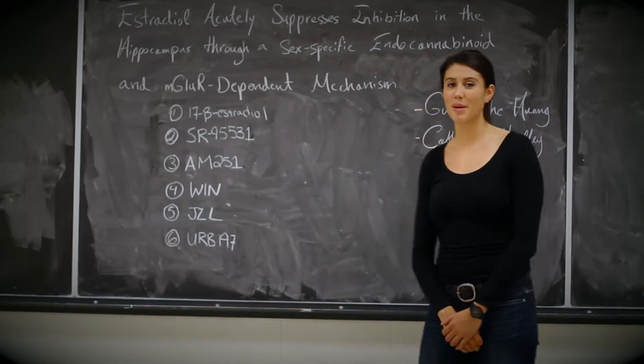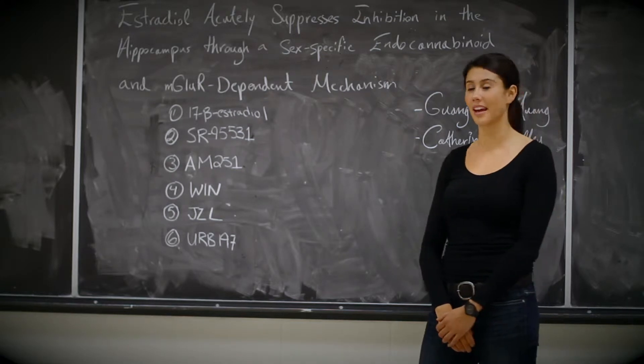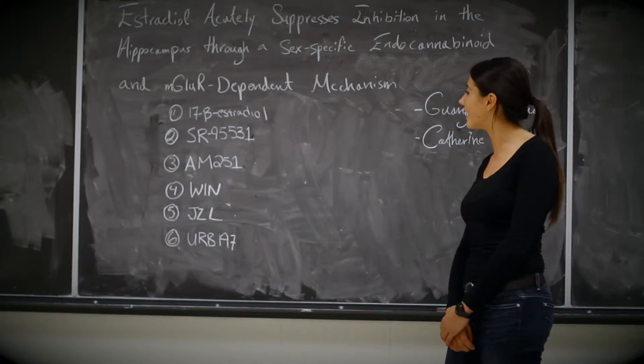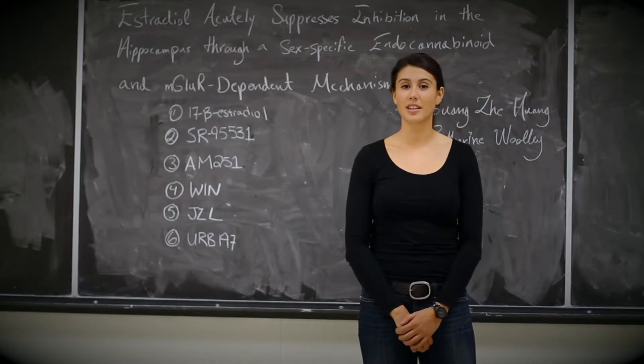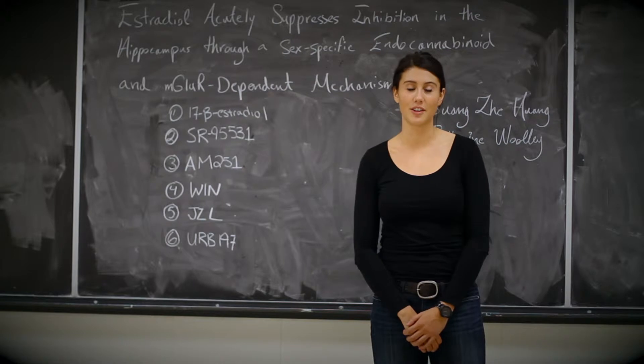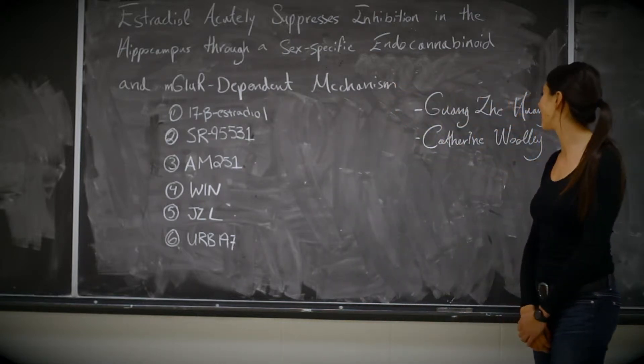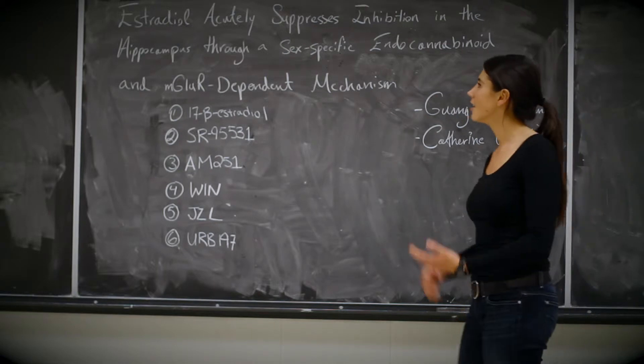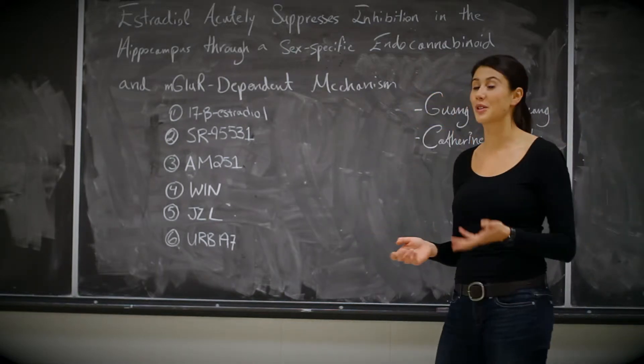So the article I chose to do my poster on is called Estrogen Acutely Suppresses Inhibition in Hippocampus Through a Sex-Specific Endocannabinoid and Club-Dependent Mechanism. So this is an article recently published in 2012 in the journal Neuron by Guan She-Hong and Catherine Boley. So already from the lengthy title, you can kind of get an idea of what the article is going to be talking about.